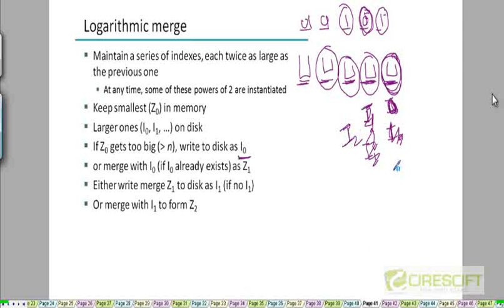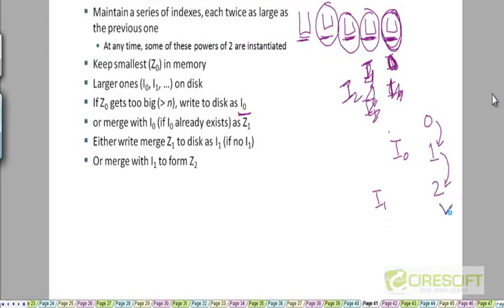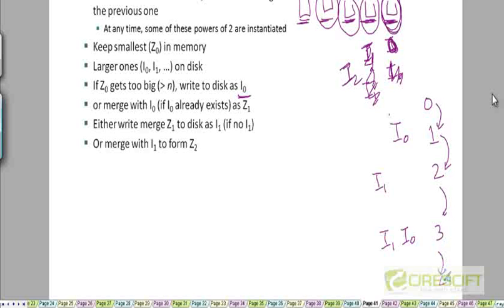Notice the pattern: we started with no index on disk — analogous to the number 0. Then we created I0, analogous to 1. Then I1, after one merge. After another cycle we have both I1 and I0 — analogous to binary 11. Then after another merge we get I2 on disk with no I1 and no I0 — analogous to binary 100.